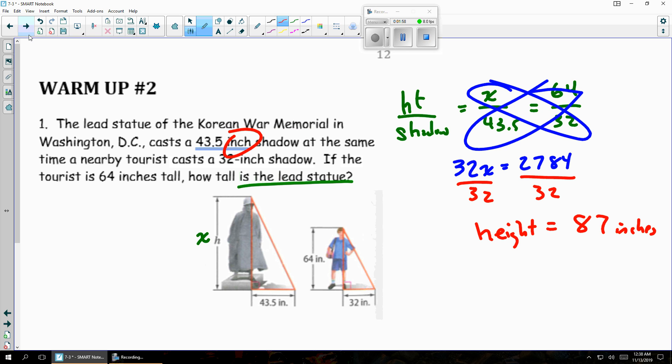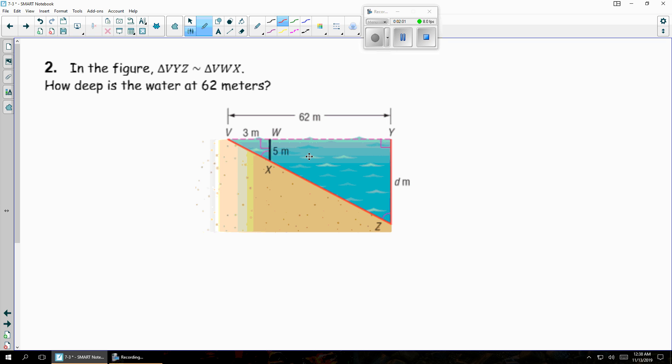Number two, in this figure we have those congruent triangles. We want to know how deep the water is at 62 meters. So the first thing I need to do is write this as we've done before. So I'm going to use similar letters. I've got VY over VW. That's the first two letters in each one of these. Then I'll go with the last two letters, telling me that YZ over WX should be here. And finally, the first and the third letter, VZ and VX.